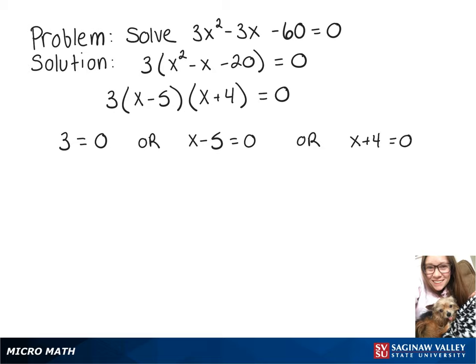Looking at 3 = 0, that's not true, that's not possible, so that gives us no solution. Let's look at our other two equations and see what those give us.